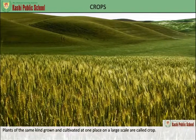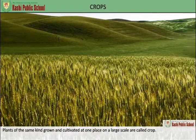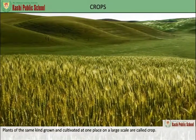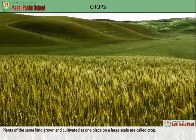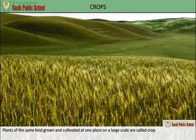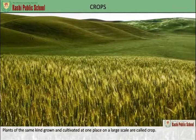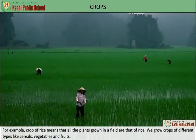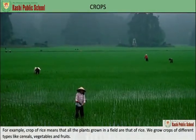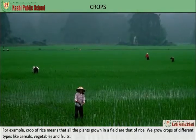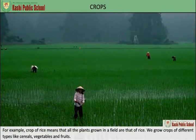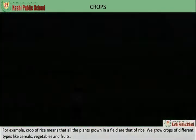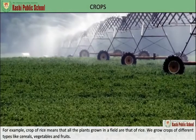Crops are plants of the same kind grown and cultivated at one place on a large scale. For example, a crop of rice means that all the plants grown in a field are that of rice. We grow crops of different types.